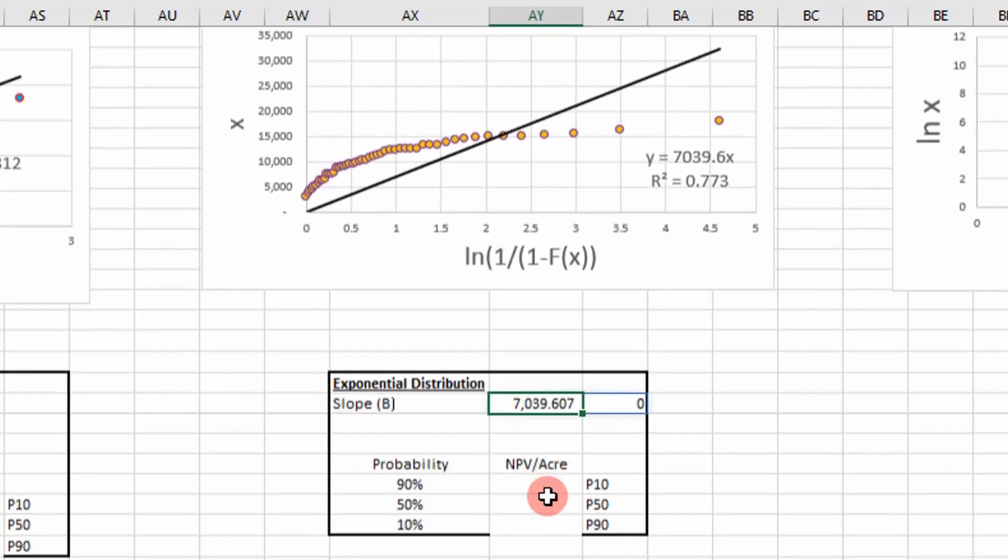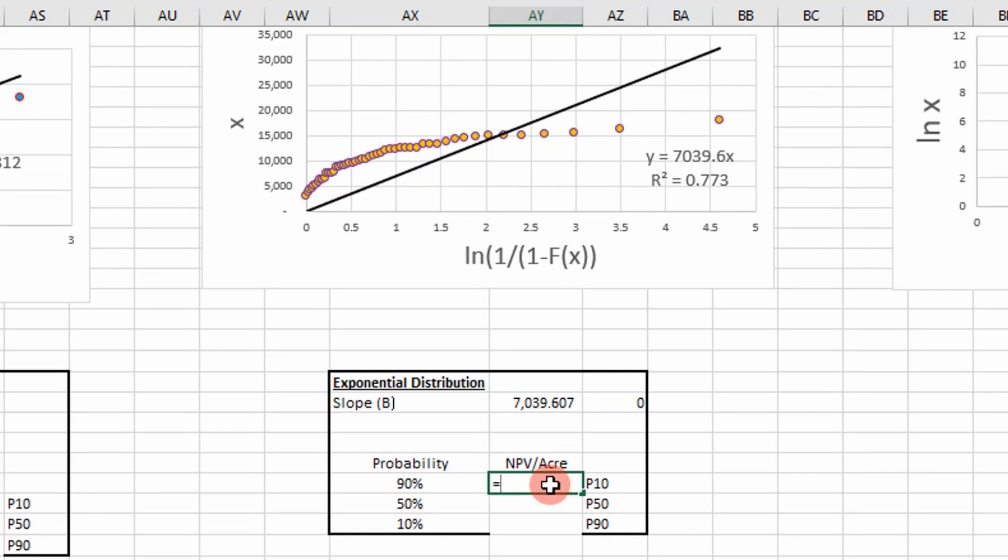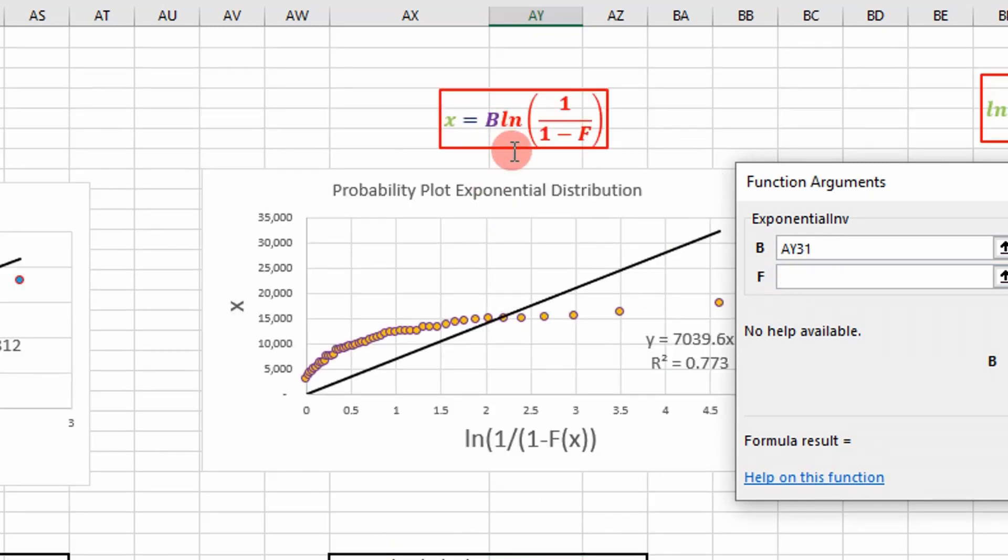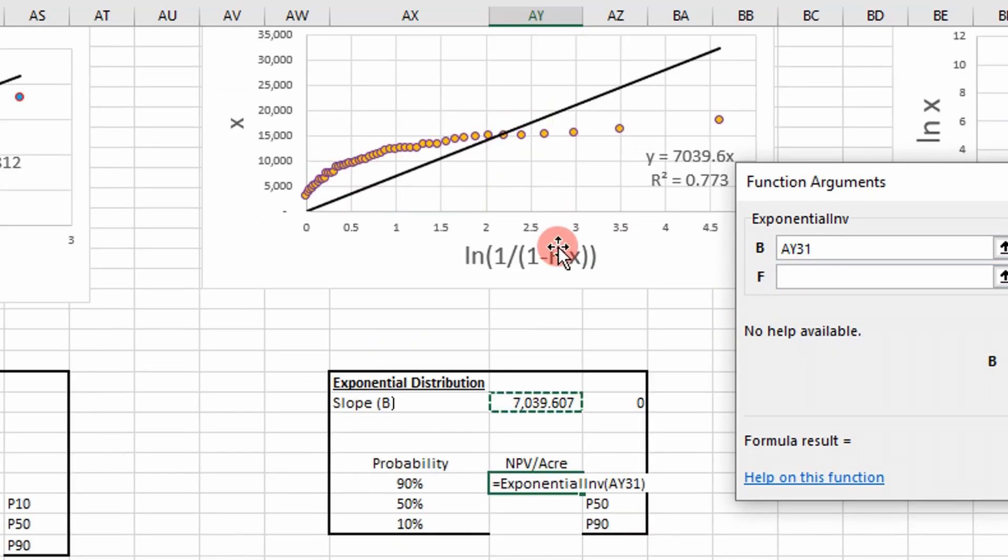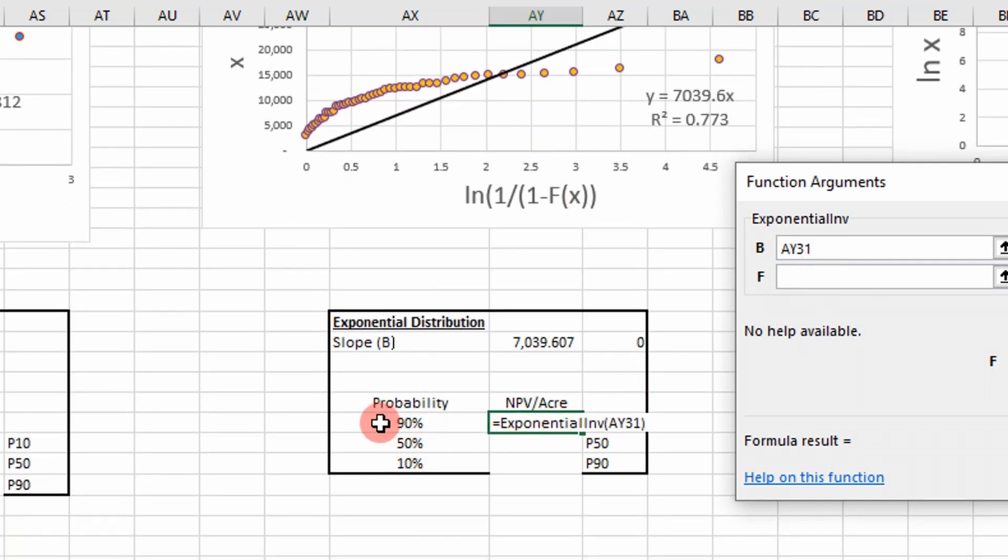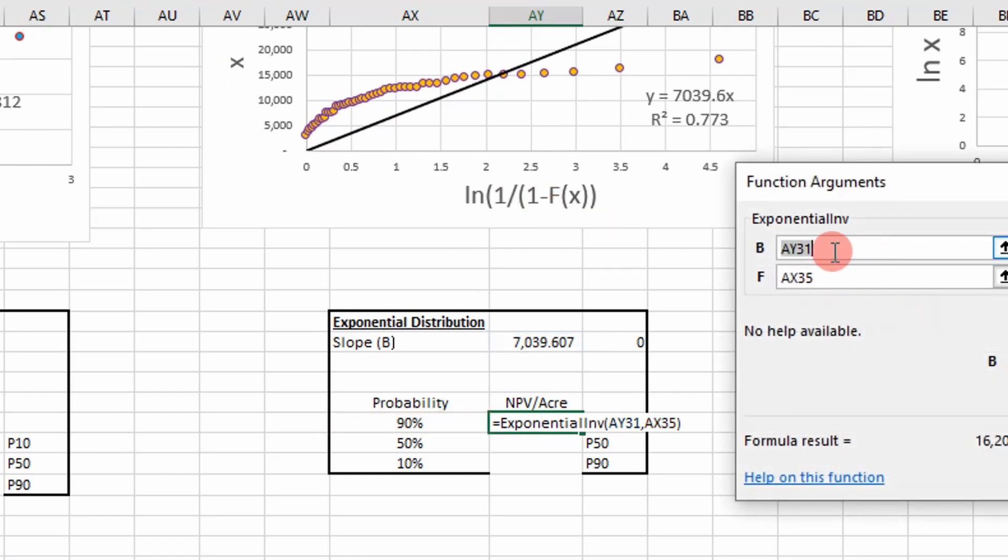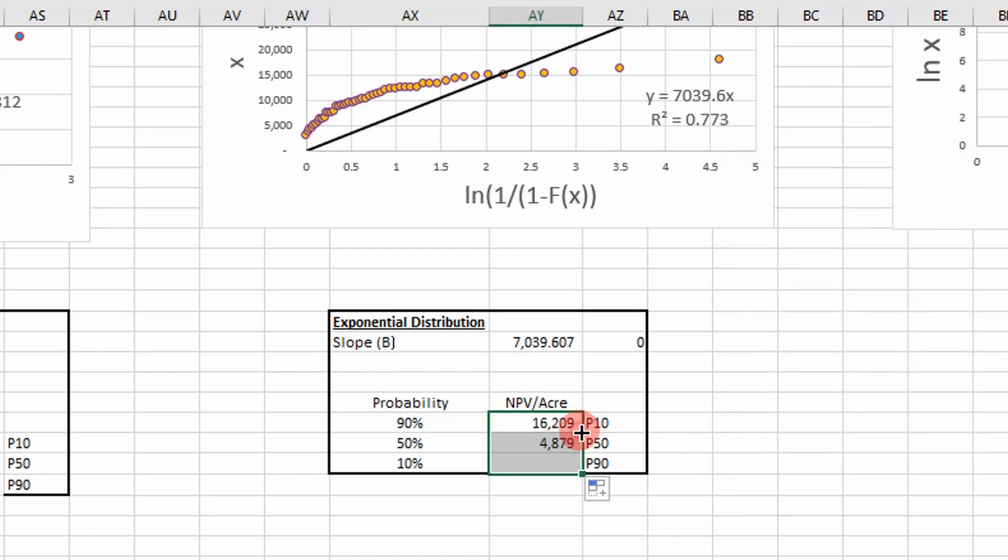It's called exponential inverse and it takes our b value and our cumulative probability. Our b value is our slope right here, and then our cumulative is given right there. For P10 we assign it the 90% probability, and I want to freeze the slope, so we go back, freeze that, carry it down.